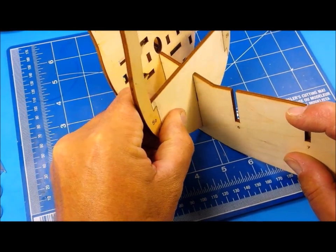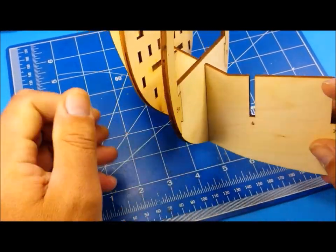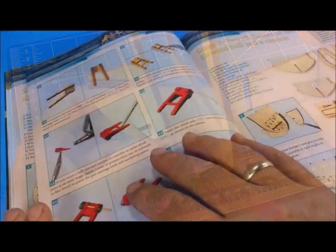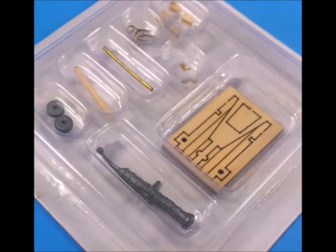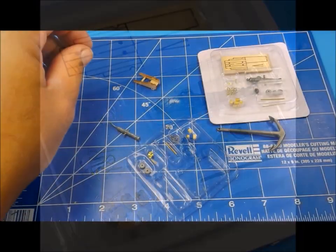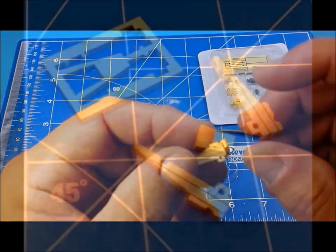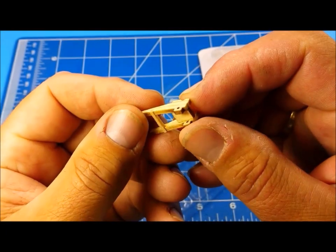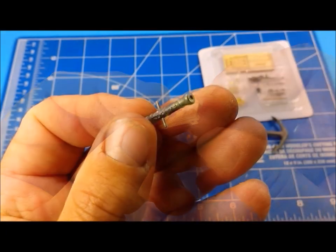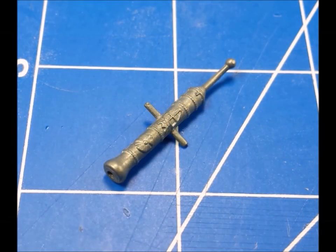Each of the bulkheads are numbered and simply slide into corresponding numbered slots. Once the forward section of the hull was completed, it was time to move on to the assembly of one of the two cannons.